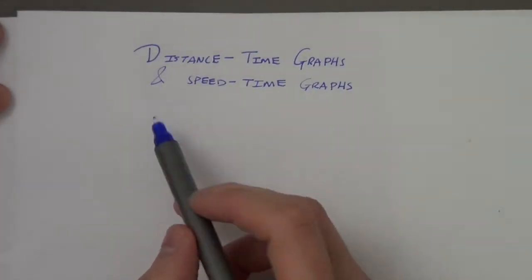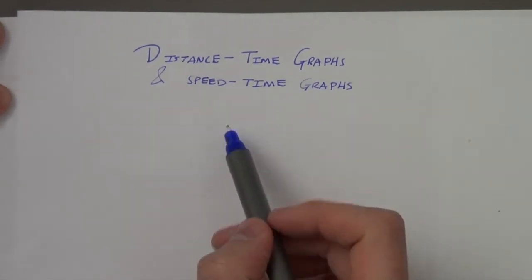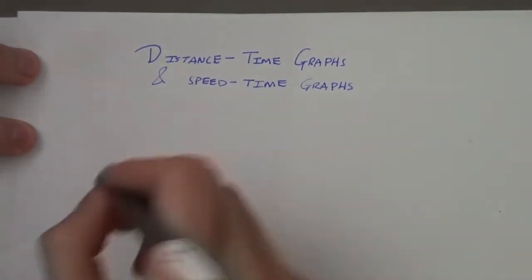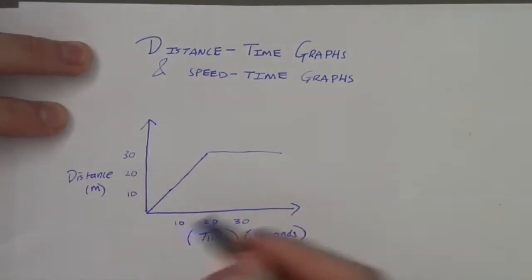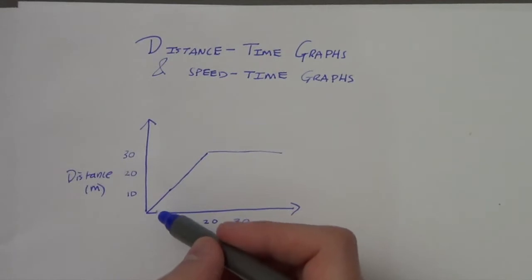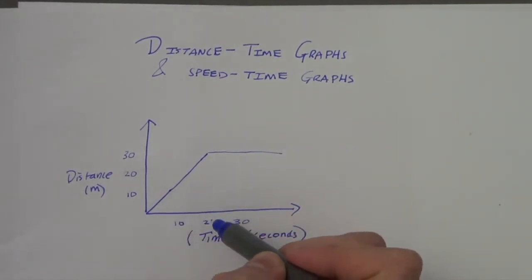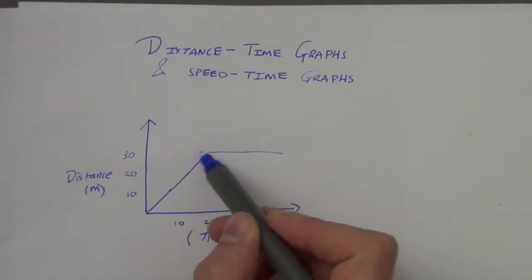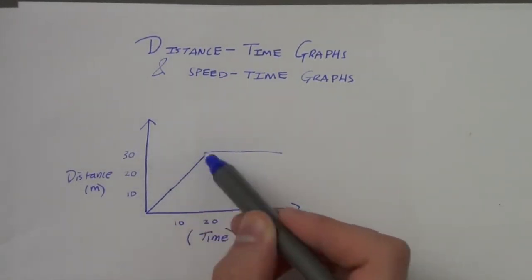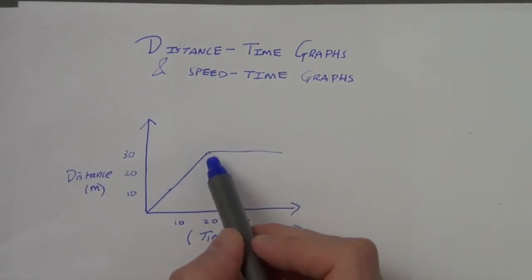This lesson is on distance-time graphs and speed-time graphs. Looking at this graph, it's telling me that in 20 seconds the object has gone 30 metres.